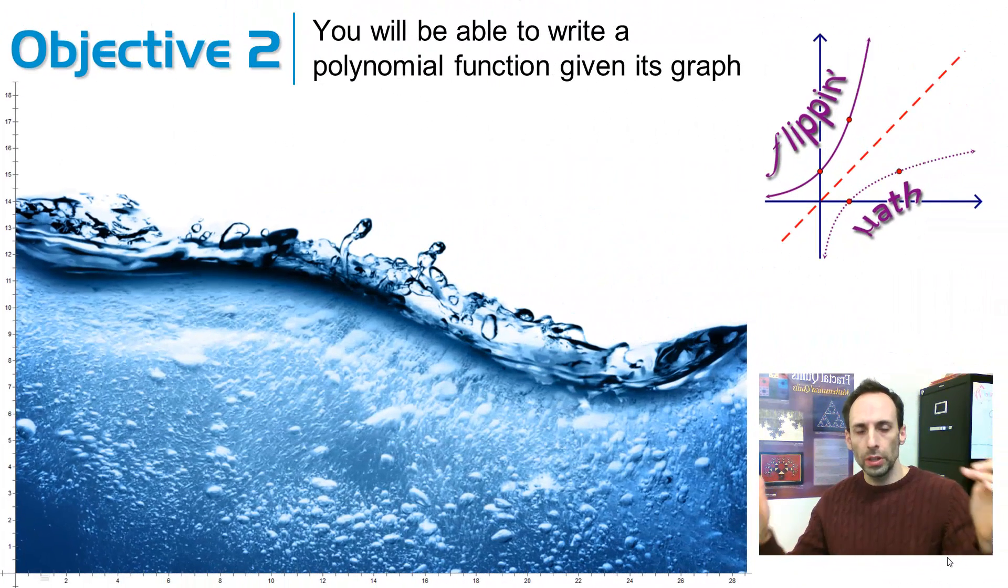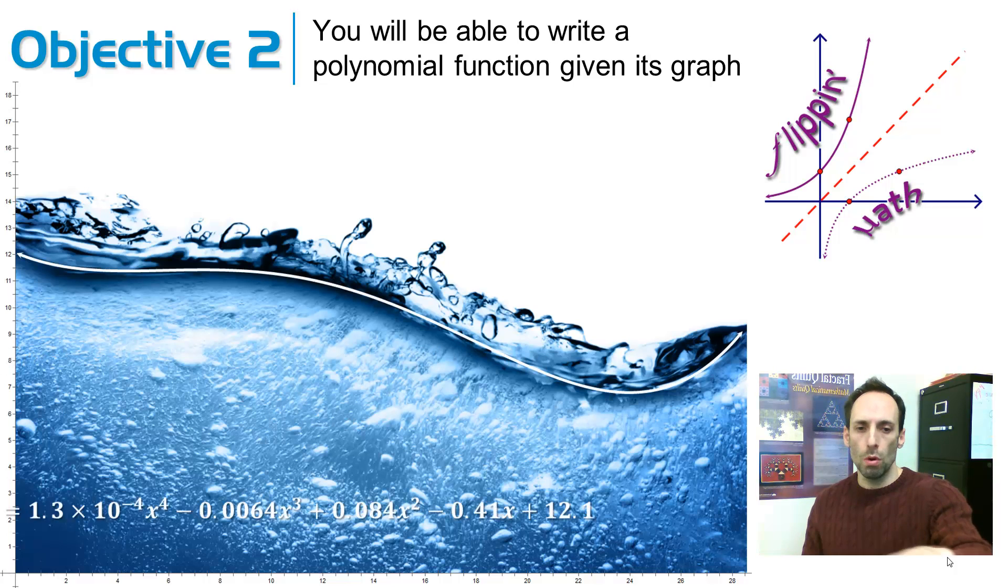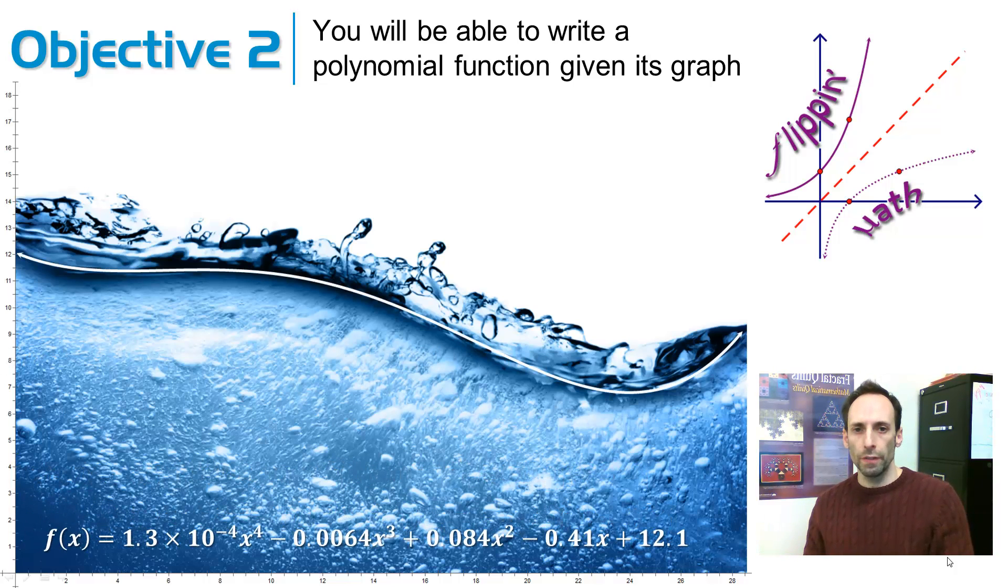Welcome back, ladies and gentlemen. Here's objective two. I'm going to be able to write a polynomial function given a graph, or maybe I have just some points that are on that graph. So for example, take a look at this water line. This water line is doing something that looks kind of polynomial. So if you had some points that are on the graph, all around the edge you see an x and a y axis, you could do something like this.